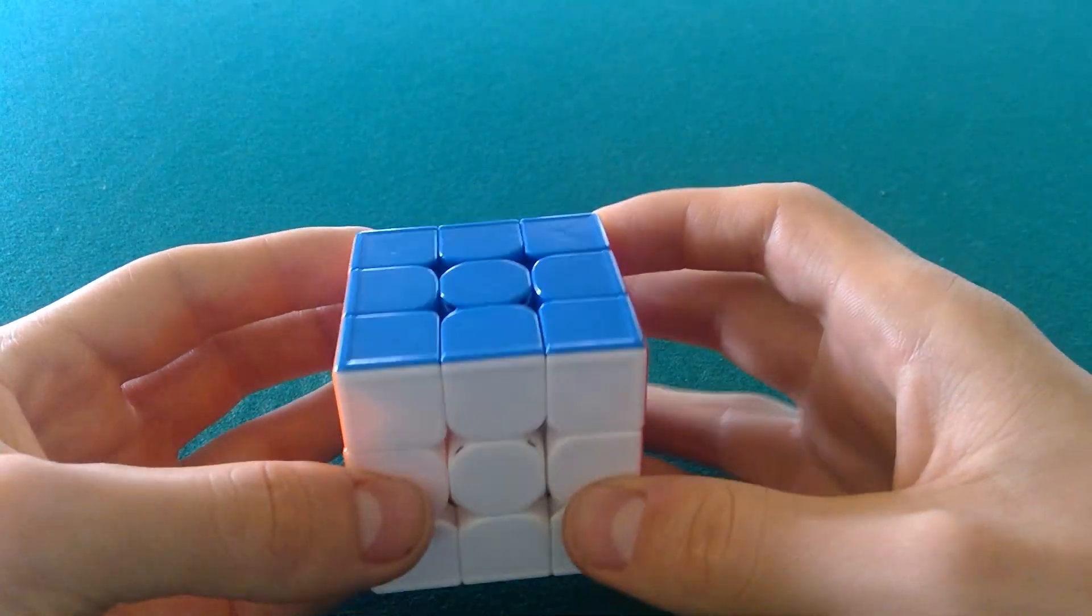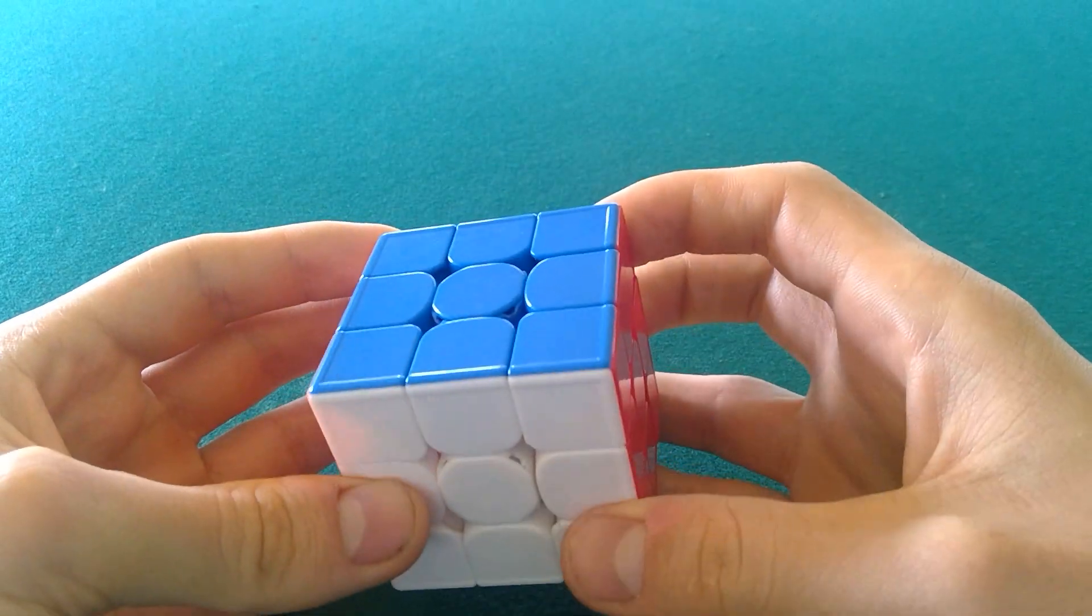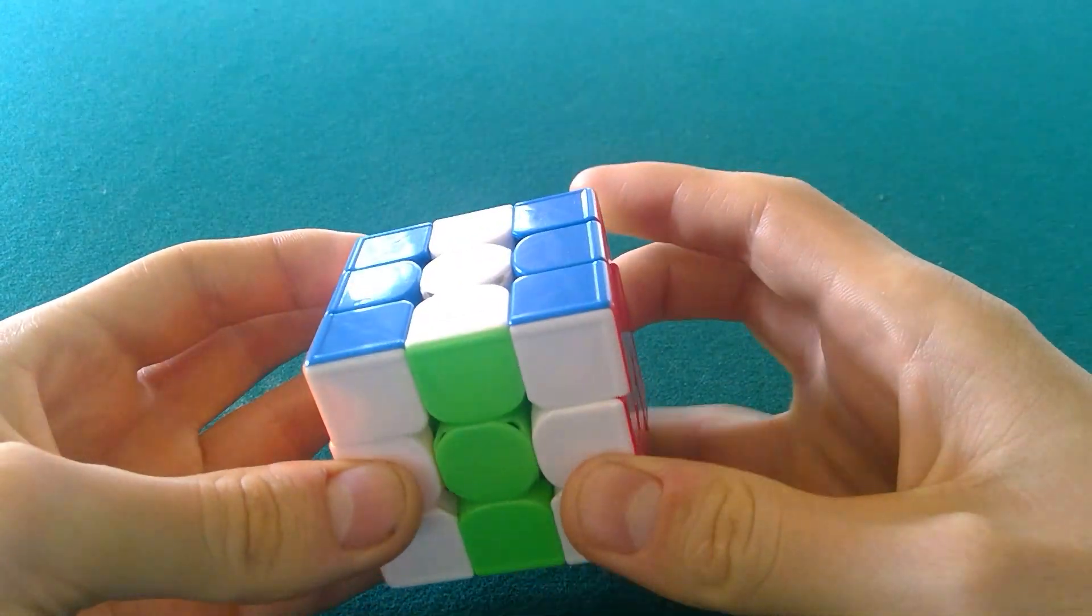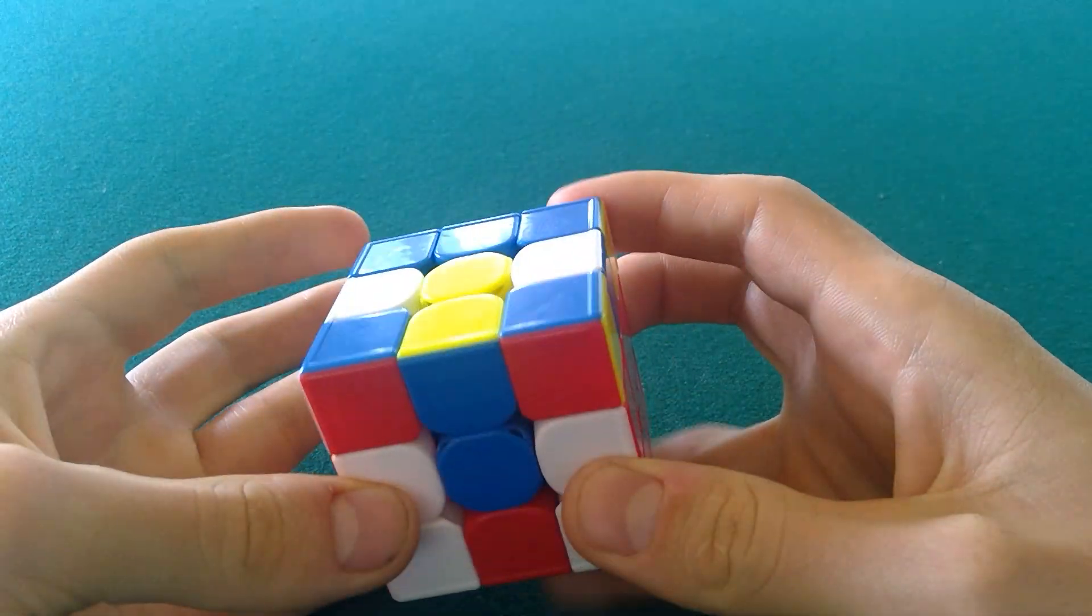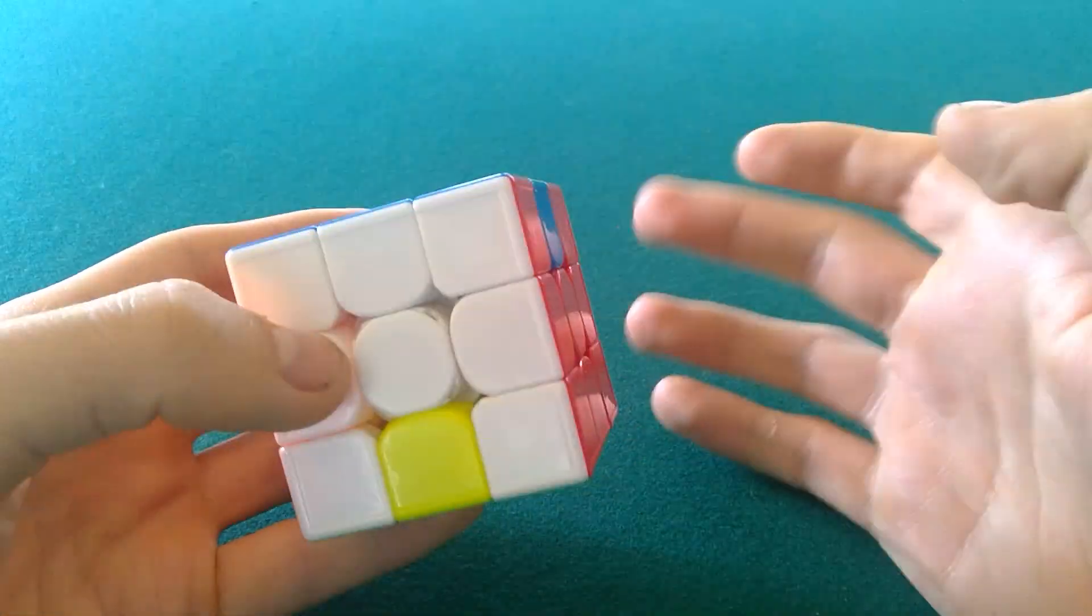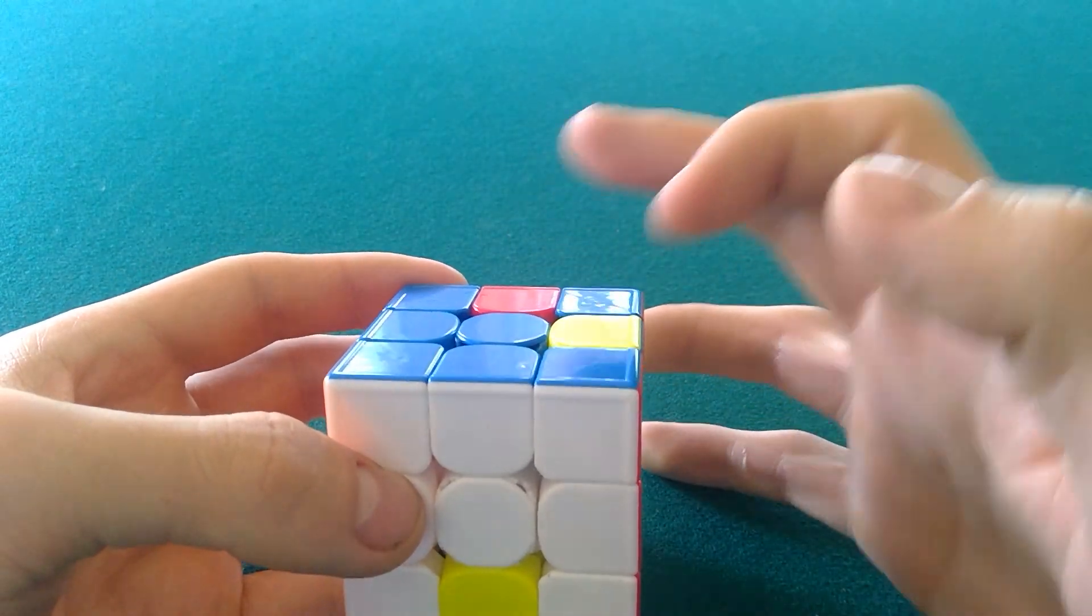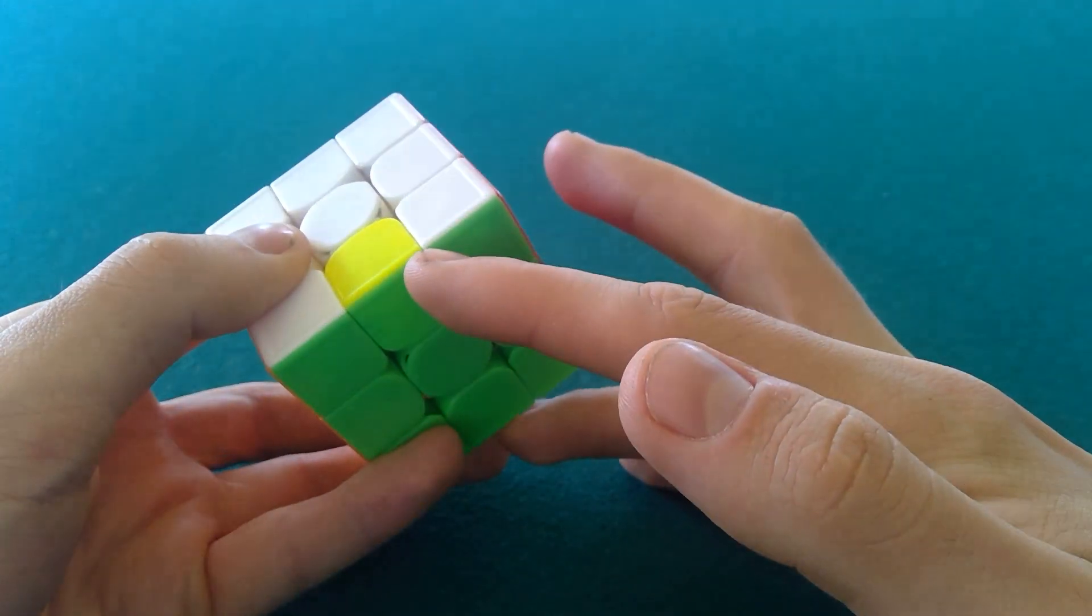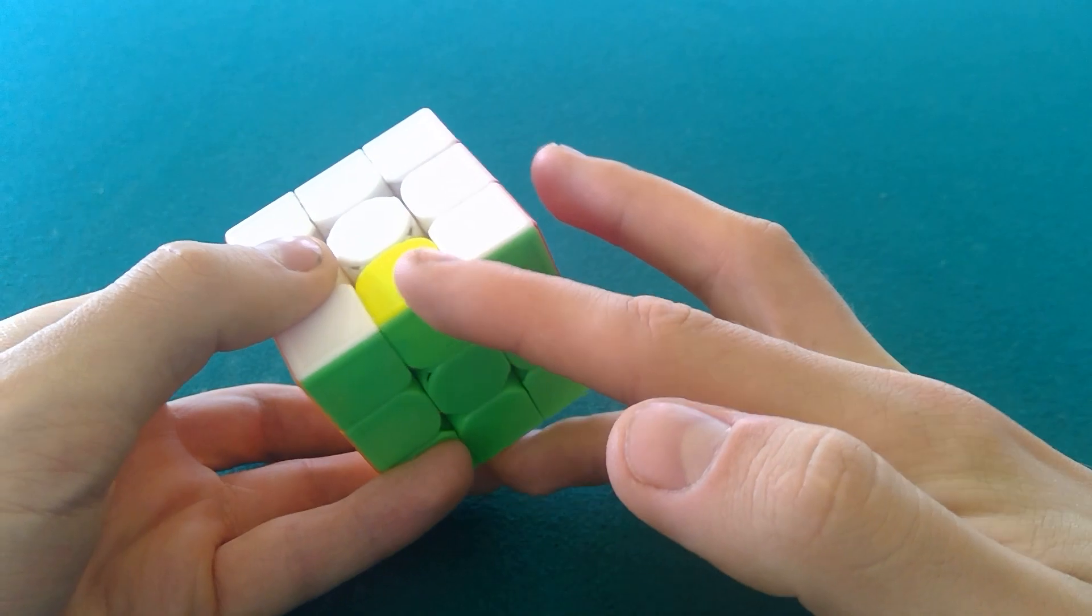The next one is going to kind of be like the opposite of that one, like if we flip that one. So basically it's like two adjacent edges on top and now they're flipped as well, and then the two opposite edges on the bottom but they're not flipped.